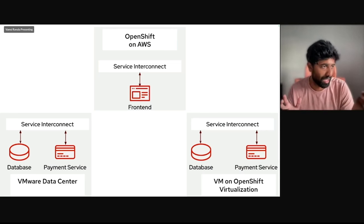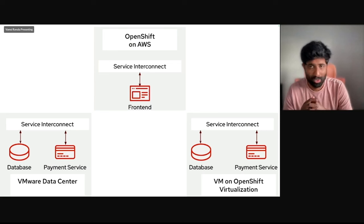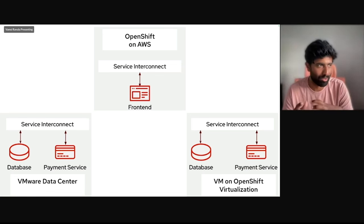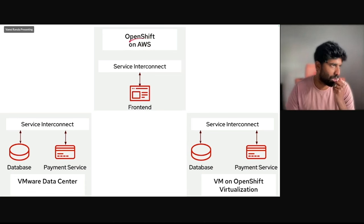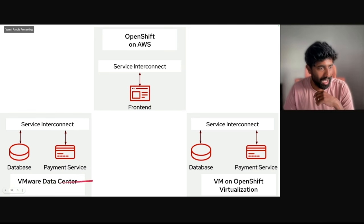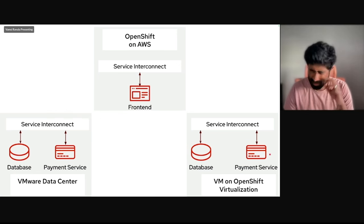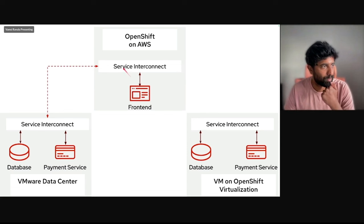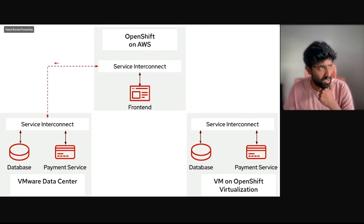I'd like to show you a visual slide on what the demo is going to be, so that we understand what's really happening. We're going to type a bunch of CLI commands which might be difficult to follow. I have my OpenShift on AWS where my front end of the application is running, and I have a database and payment service running in a VMware data center. The connection between my OpenShift cluster and the VMware data center has already been established using Red Hat Service Interconnect — that's the red line you see here.